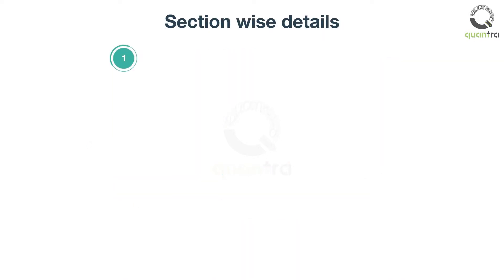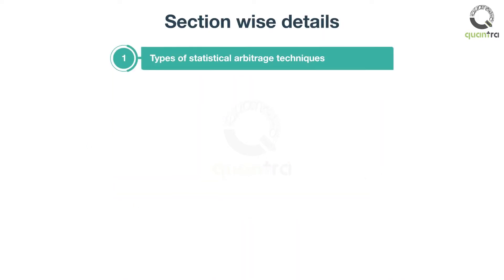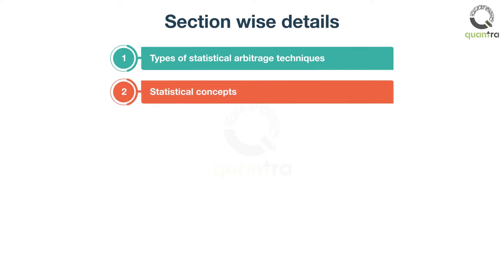In the first section of this course, you will be introduced to the different types of statistical arbitrage techniques. In the second section, you will understand different statistical concepts such as correlation, co-integration, Z-score, and linear regression, and learn to interpret co-integration test results.